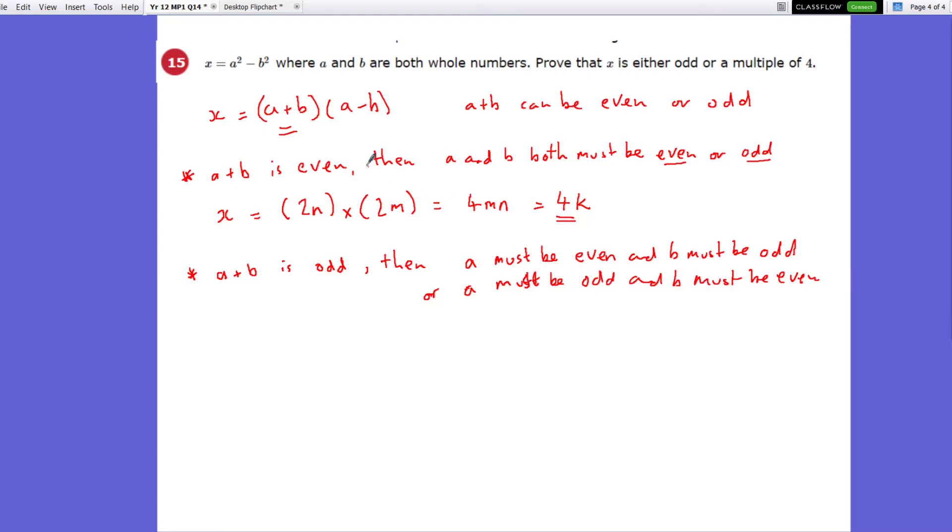For similar reasons, when we subtract them, an even subtract an odd number ends up being odd, or an odd number subtract an even number ends up being odd. So in this situation, this expression is going to end up being odd, and a minus b is going to end up being odd.